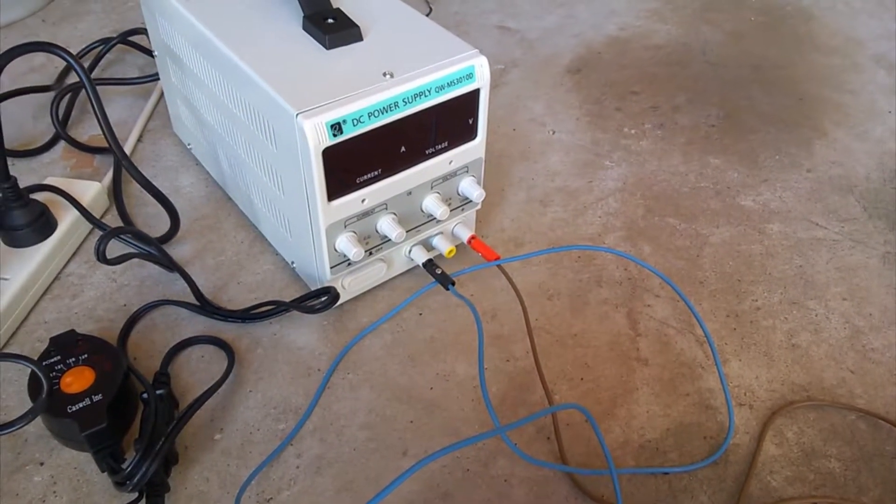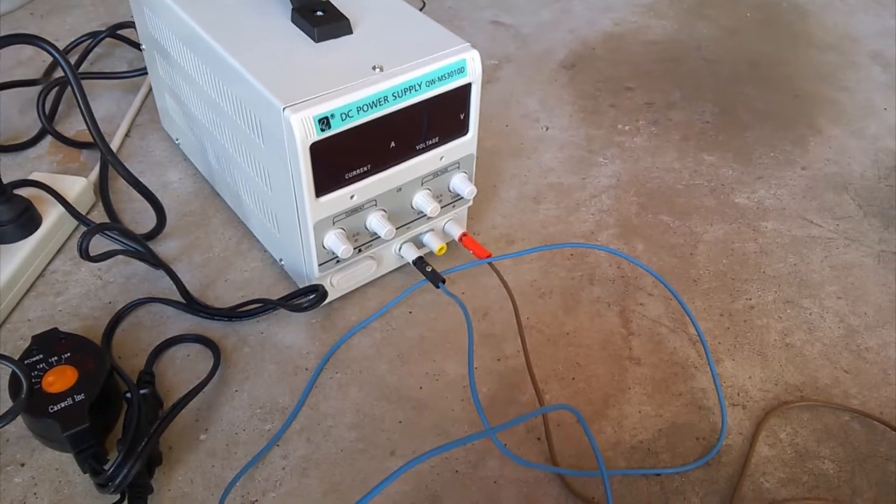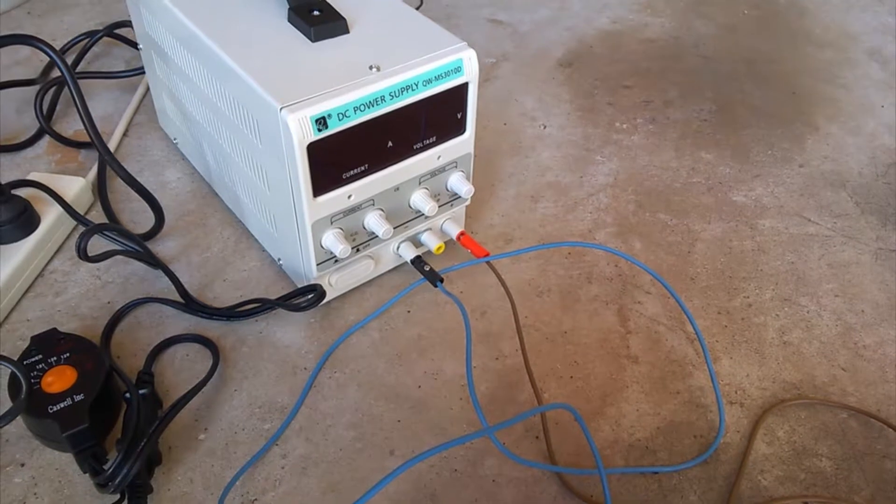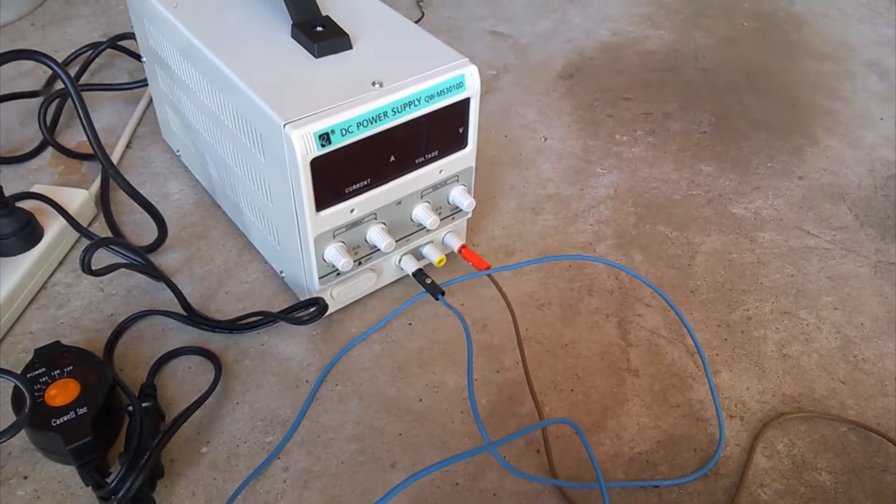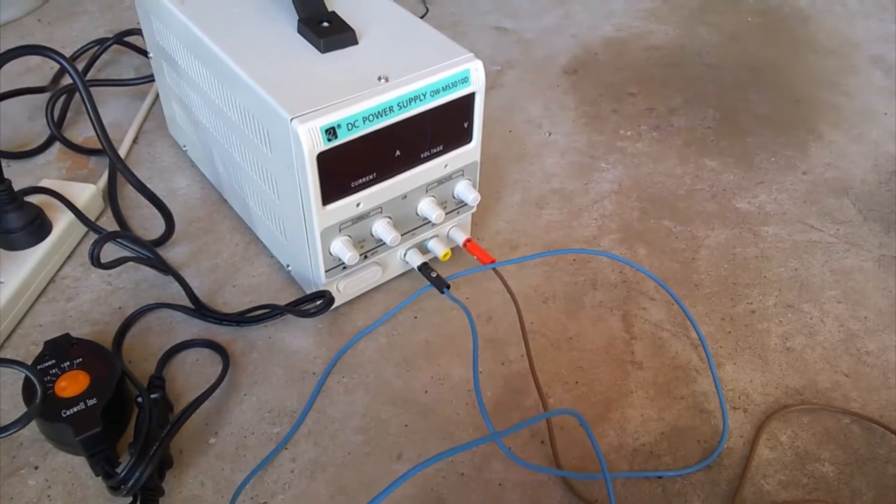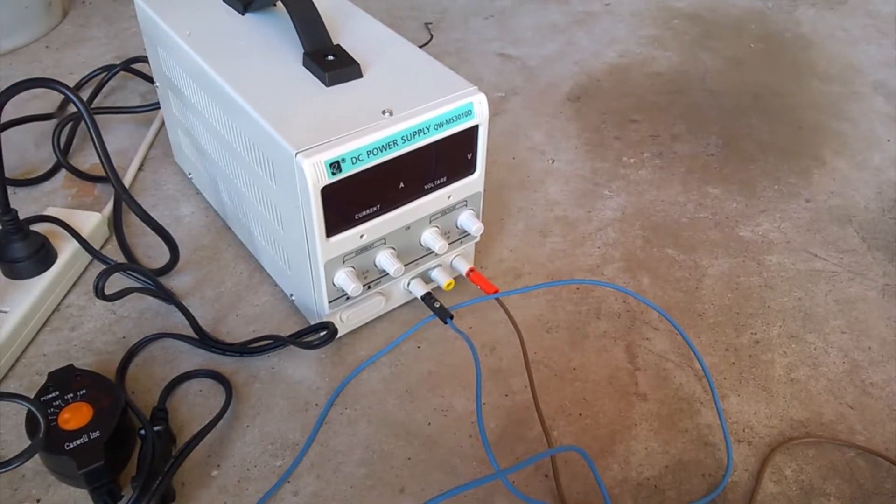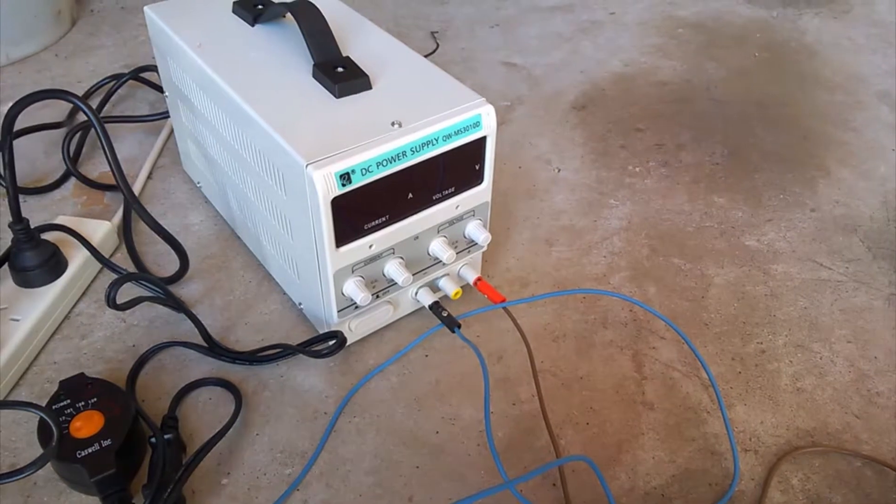The amount of current required for nickel plating is an average of one amp for an area of 100 square centimeters. So it's very important to control the power and current that flows through the piece you want to plate to have a nice plating.